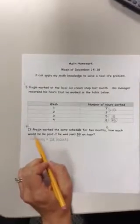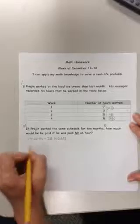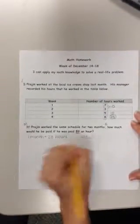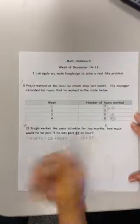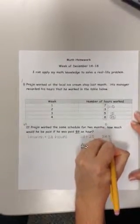In the middle, it says he worked the same schedule for two months. So here's one month, so I need to know what two months would be. Well, that would be the same as saying he worked 23 hours one month, and then we're going to add 23 hours for the second month. Or I can say 23 times 2.